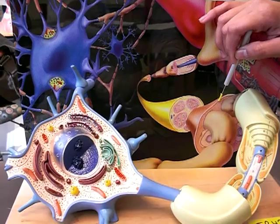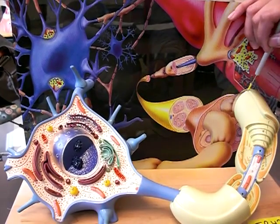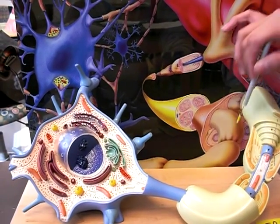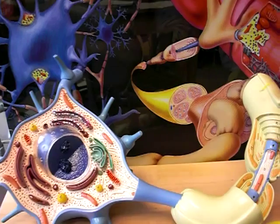And within the fascicle we have the Schwann cell, which is here. And the covering to the Schwann cell would be the endoneurium.